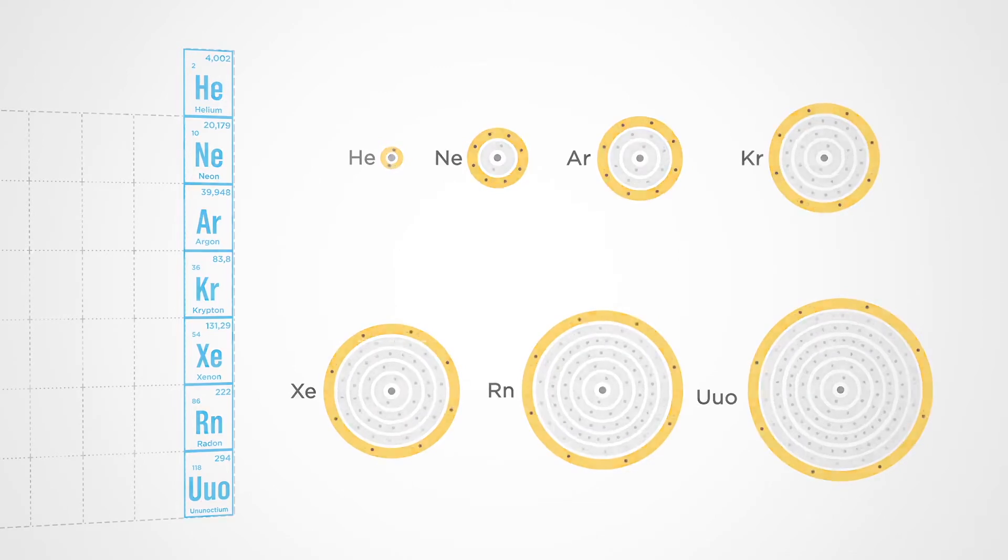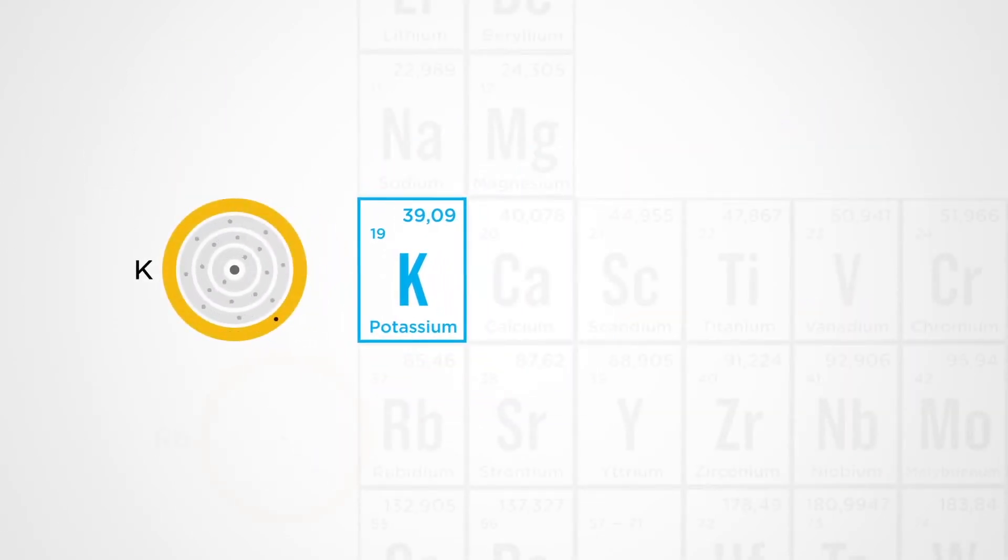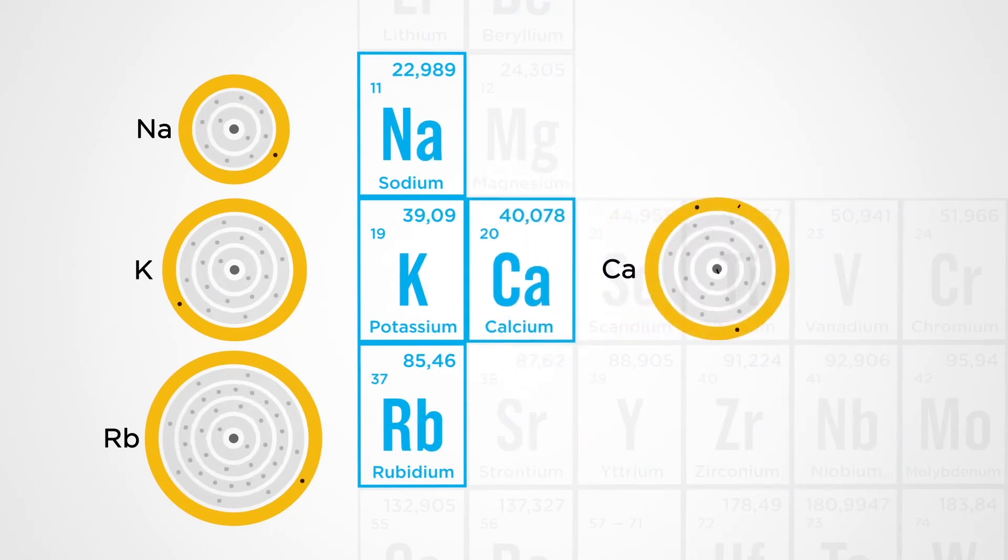That's why each chemical element in the periodic table has a very well-defined neighborhood. Above and below, it has elements with the same distribution of electrons and very similar properties. And on its right, it has an element that has one electron and one proton more, and therefore has different properties.